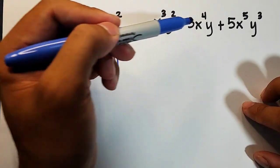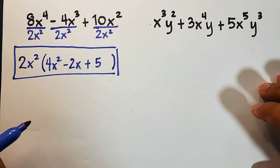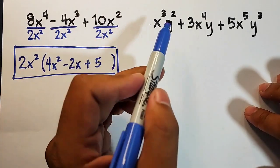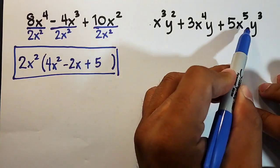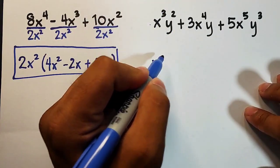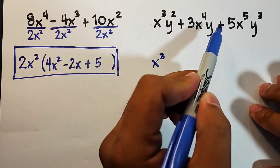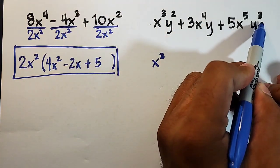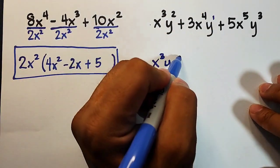Let's move on with this. Looking at the numbers: 1, 3, 5 - there's no greatest common factor. So check the variables. Look at the x variables - all have x variables: x³, x⁴, x⁵. I'll choose x³. For the y variables: y², y, y³. I'll choose y, since it has the least exponent of 1.